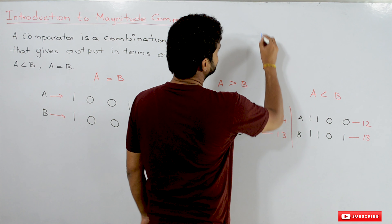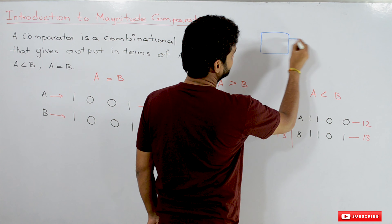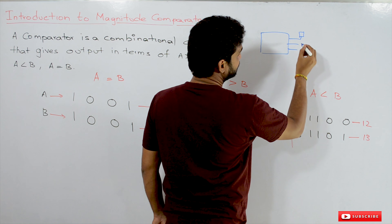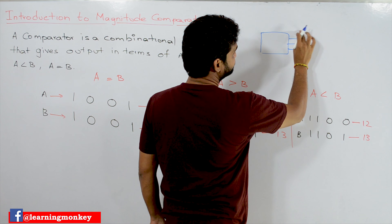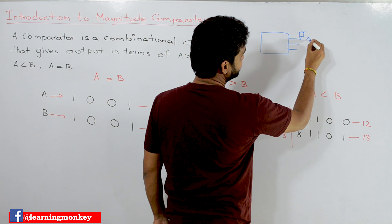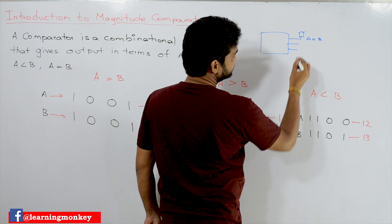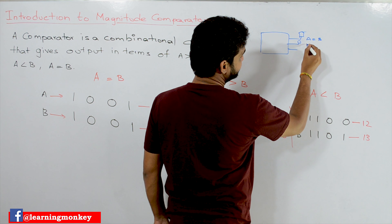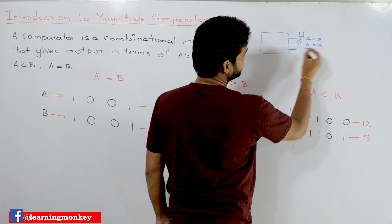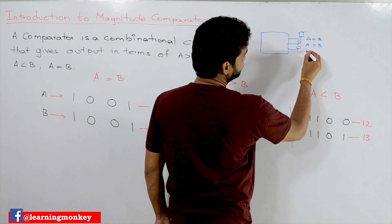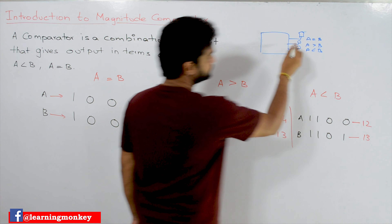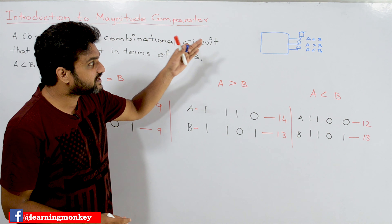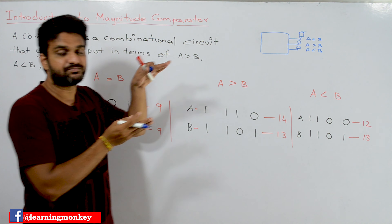This comparator is going to have three outputs. One light will come on if A is equal to B, this light will be eliminated if A is greater than B, and this light will be on if A is less than B. So this is the design of the comparator. The comparator is going to take two inputs.